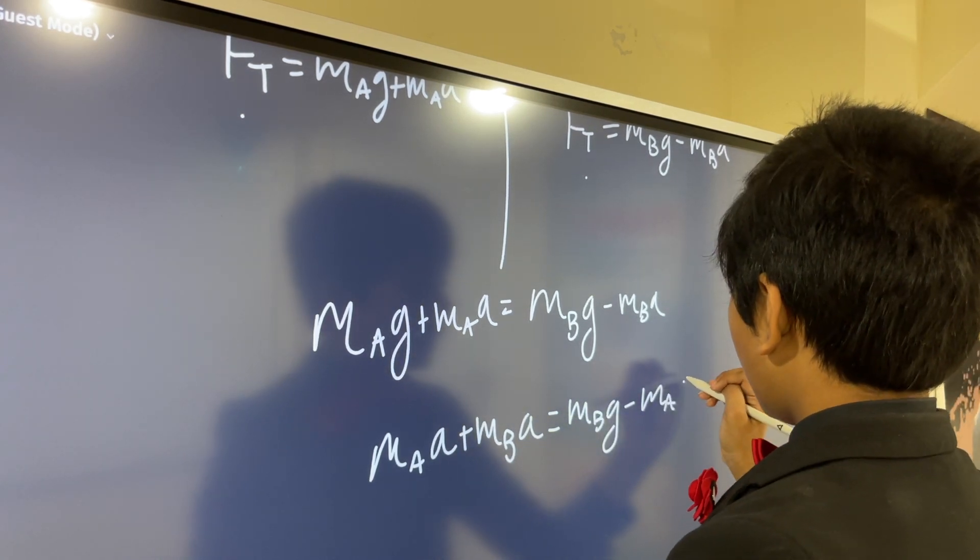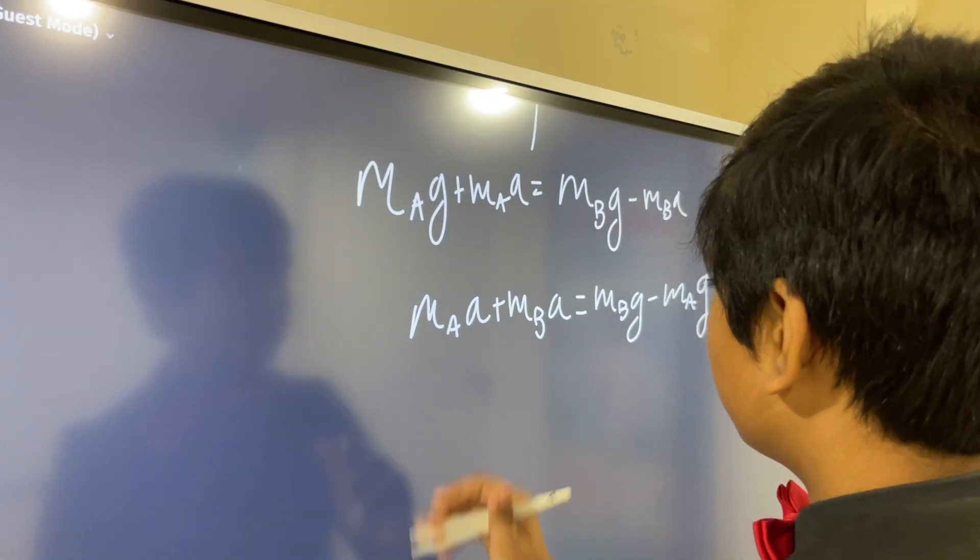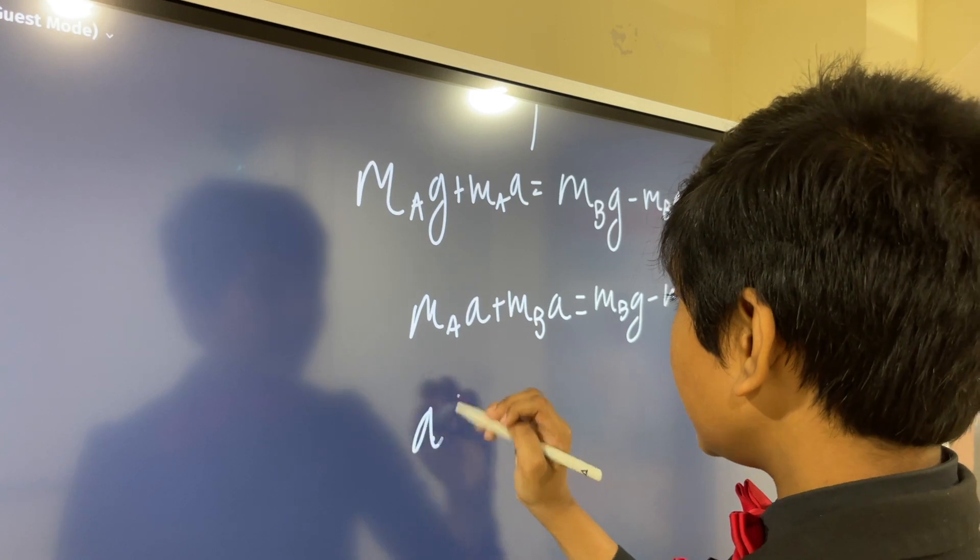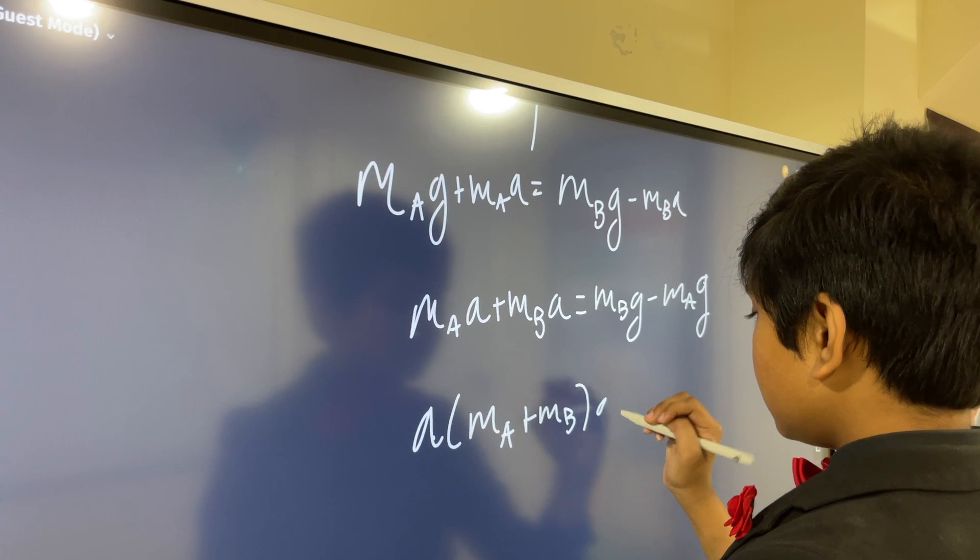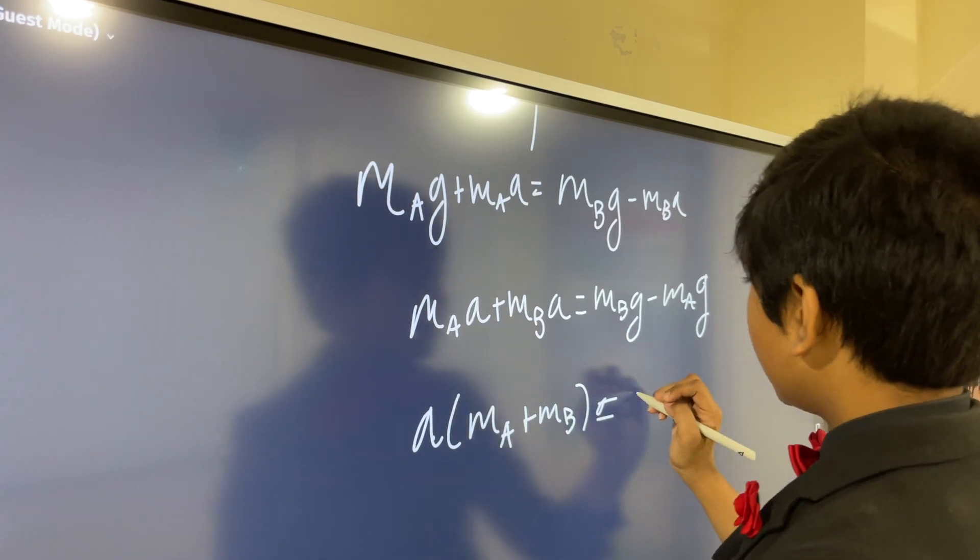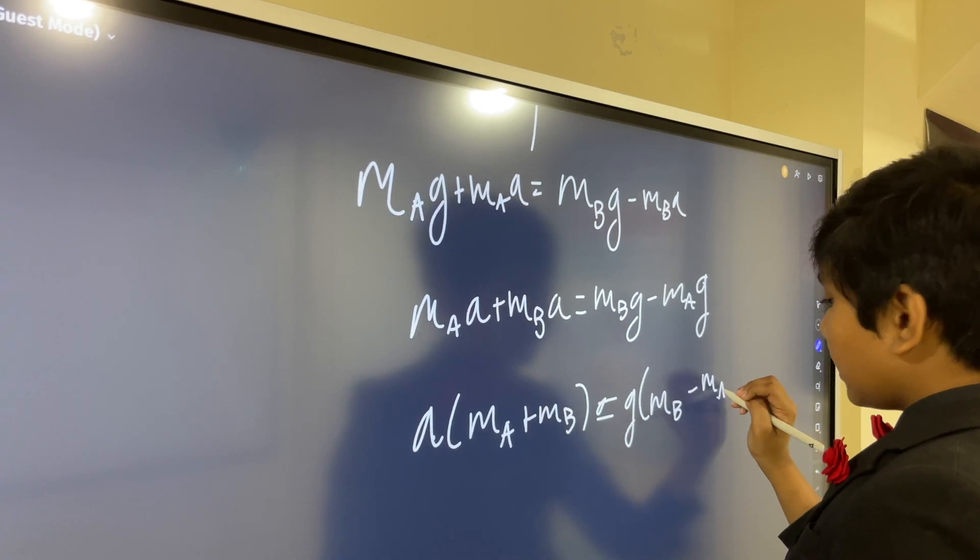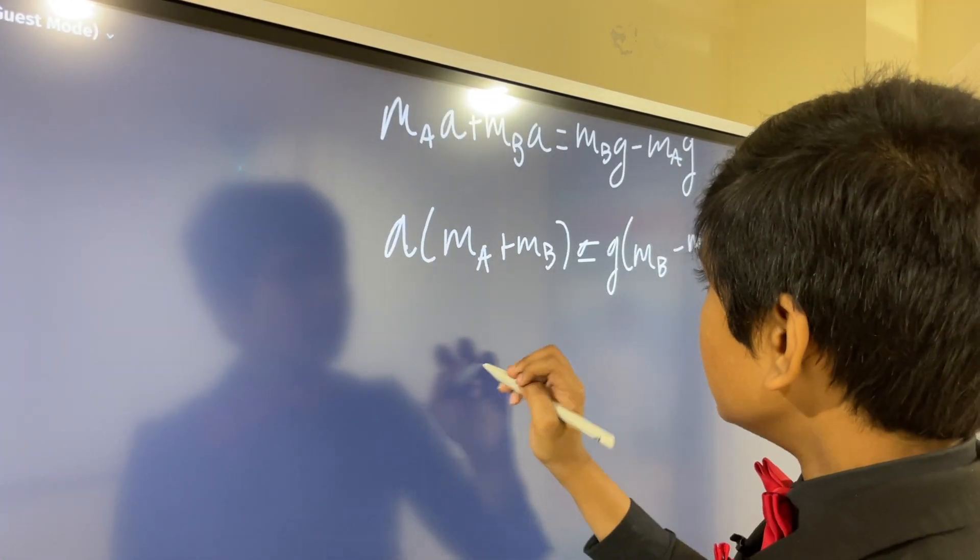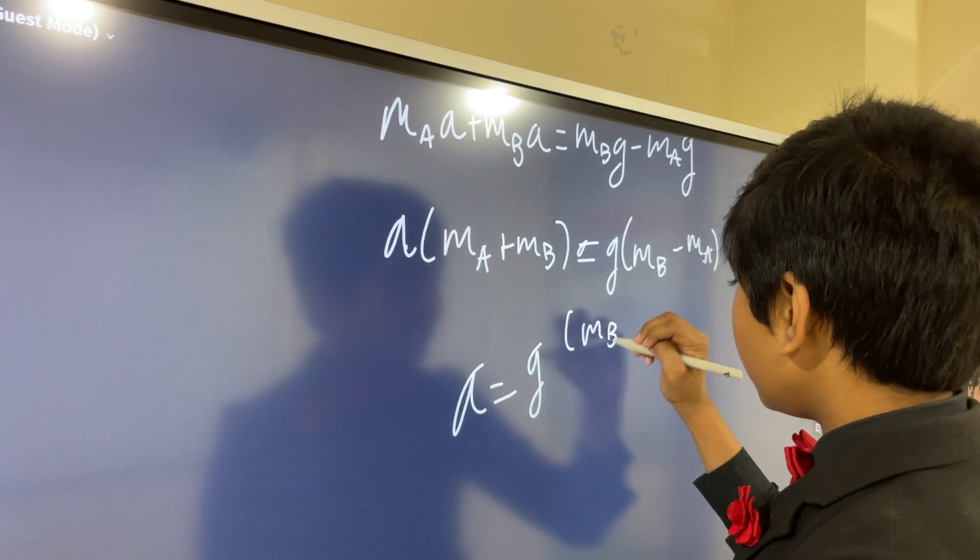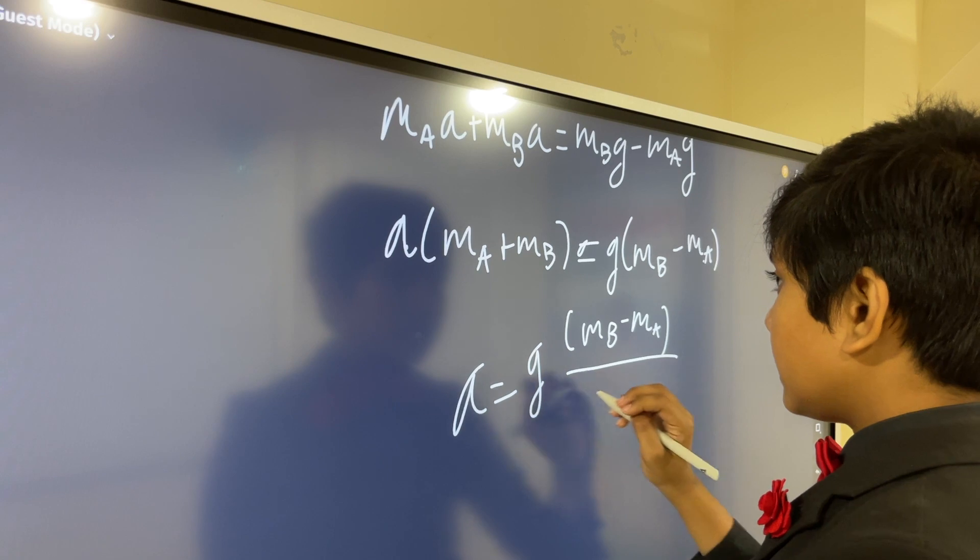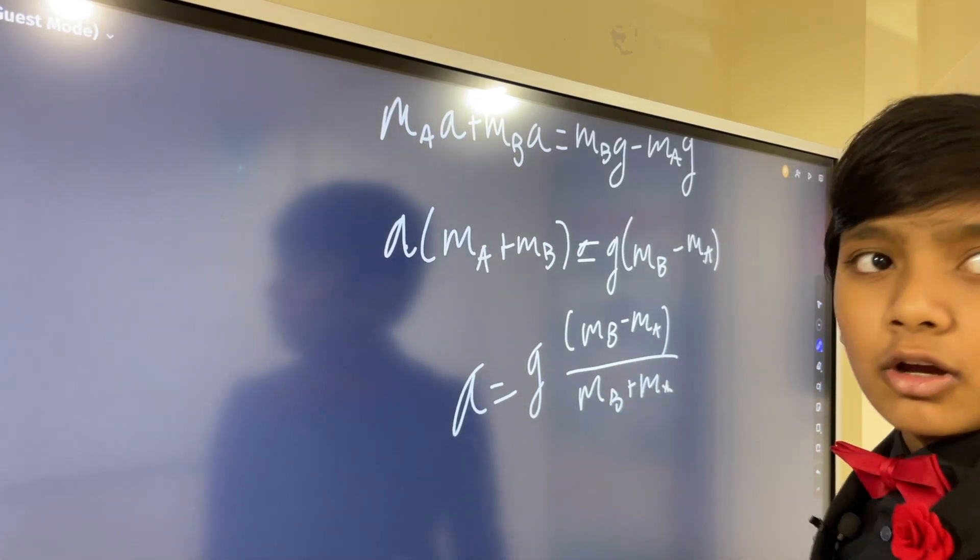No, not MBA. MAG. So, we have A times MB plus MA. So, we have A is equal to G times MB minus MA over MB plus MA. Yes, I did rearrange them. Cry about it.